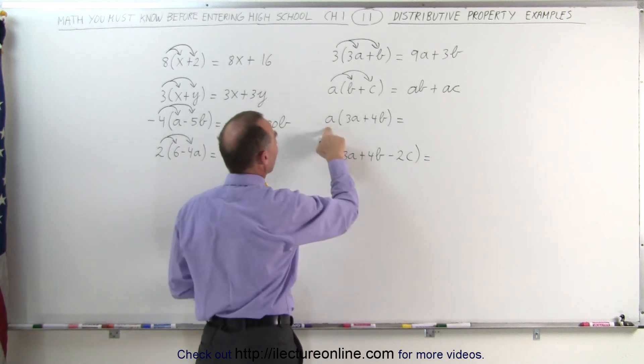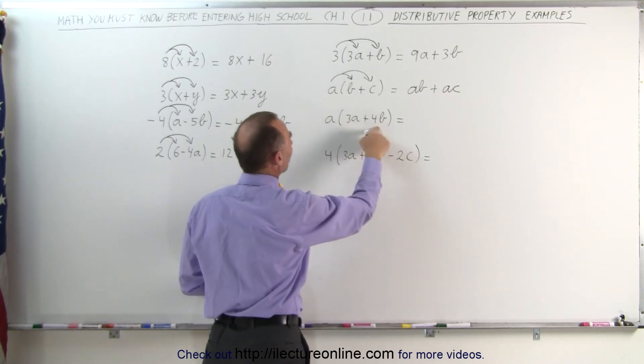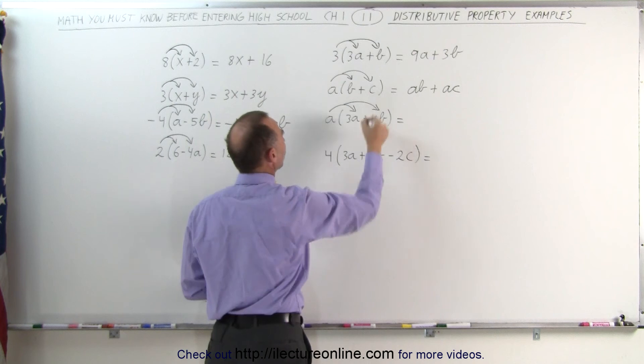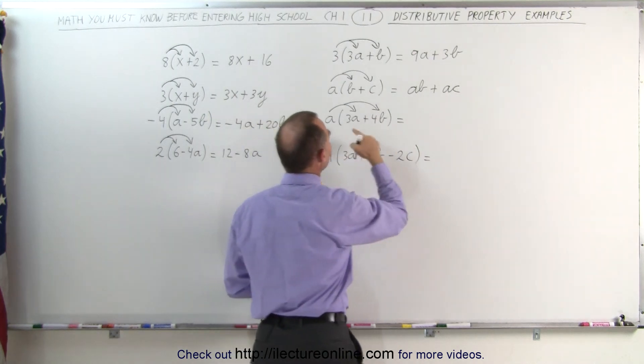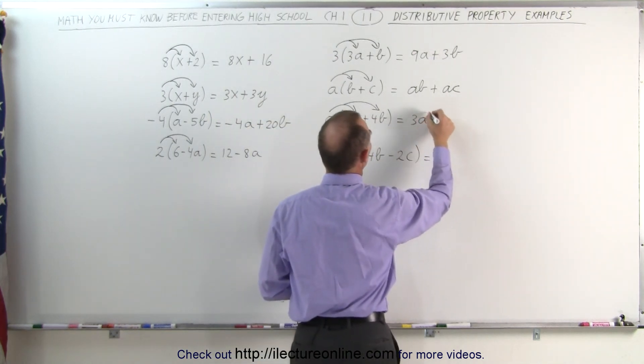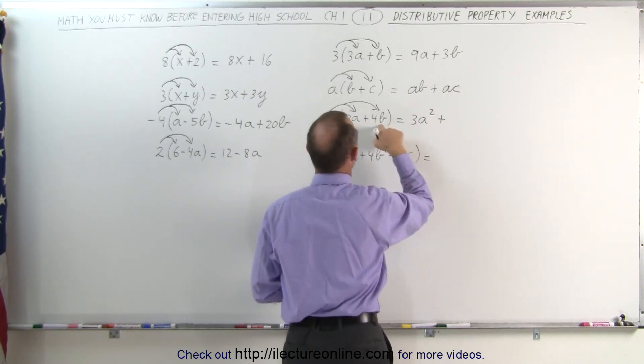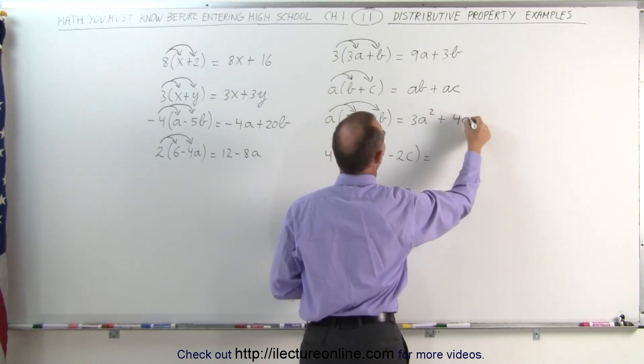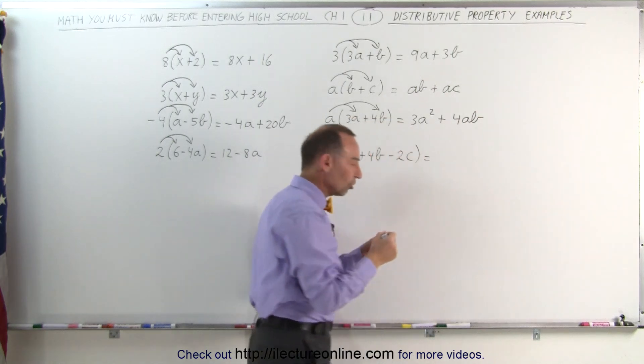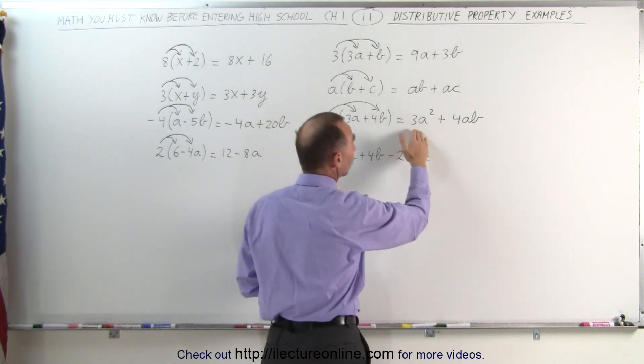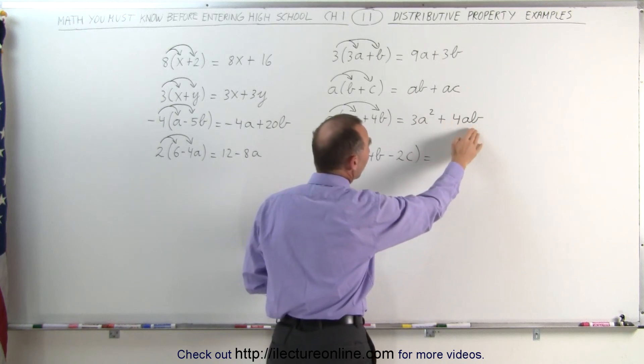Here we're multiplying the a times 3a and the a times 4b. Again, we distribute the a across both terms in the binomial. a times 3a is 3a squared, because a times a is a squared, plus a times 4b gives me 4ab. It's traditional to write the letters representing either constants or variables in alphabetical order.